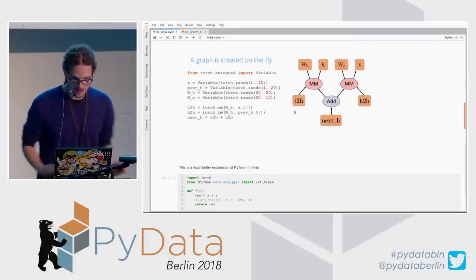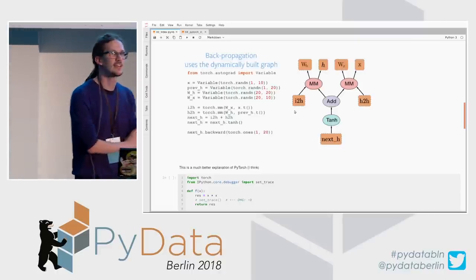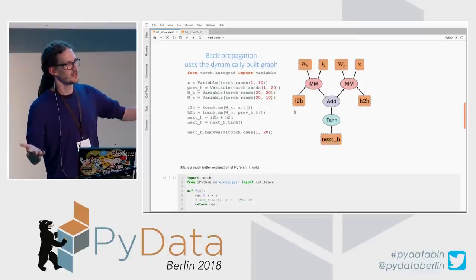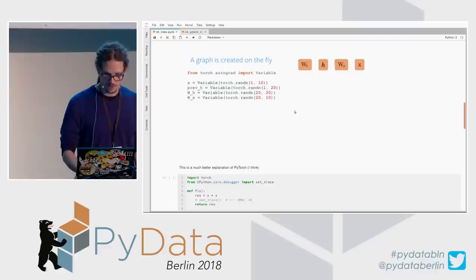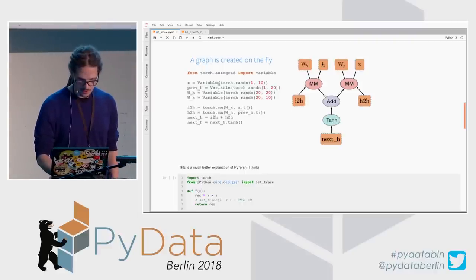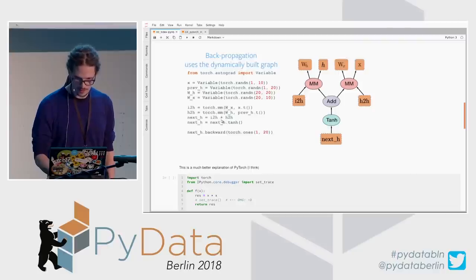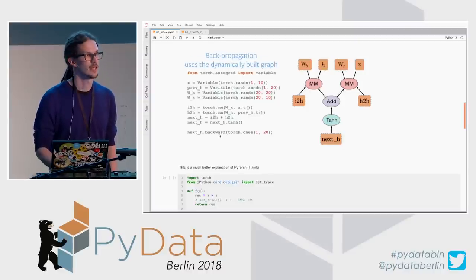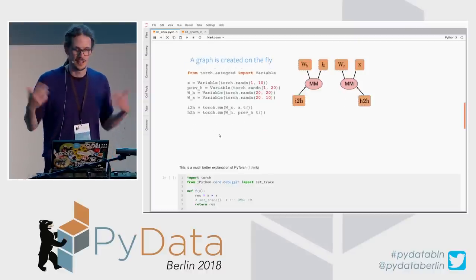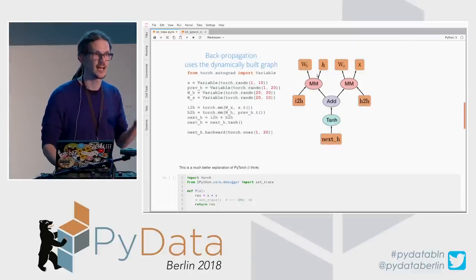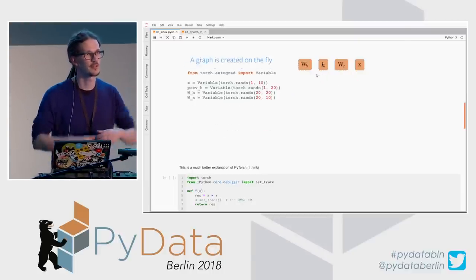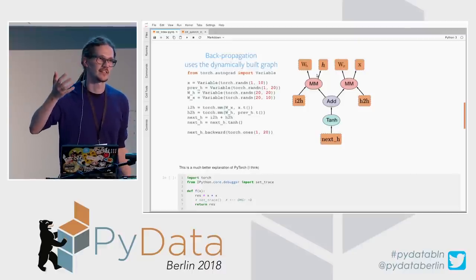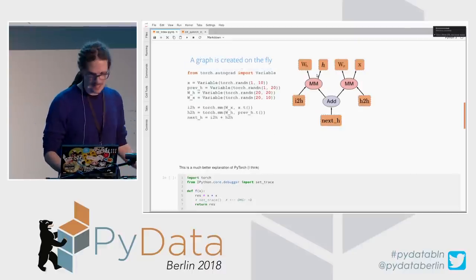PyTorch overview. Pretty much every presentation about PyTorch contains a standard example: they create some variables, multiply them, add them, compute a tangent, then do back propagation. But why is this so great? The idea is that the computational graph is built up as you execute it, as opposed to TensorFlow where you define your graph and then run it. Here, you create your graph by running it. That's a big difference.